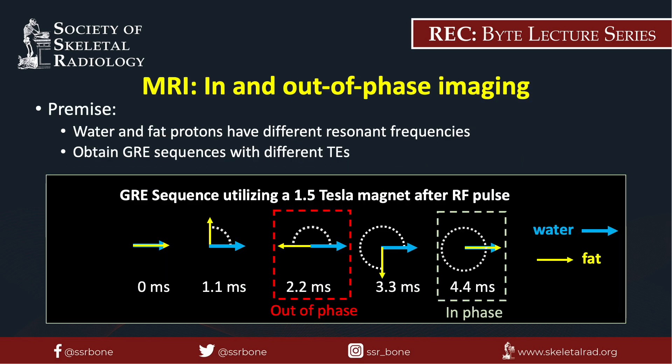You may be familiar with in-and-out phase imaging in other applications, for example for the evaluation of adrenal adenomas. The use of in-and-out phase imaging in bone marrow hinges on the premise that neoplastic processes usually completely replace bone marrow fat, and non-neoplastic processes such as red marrow reconversion do not completely replace normal bone marrow fat. In-and-out phase imaging looks for the presence of intravoxel fat, which may suggest a non-neoplastic process such as red marrow reconversion.